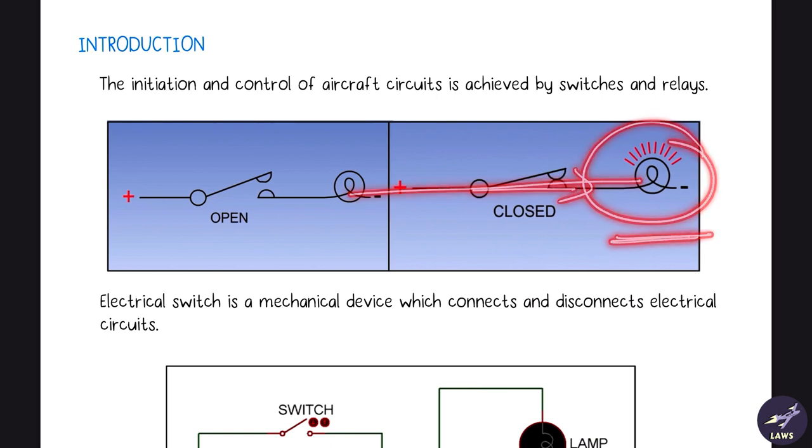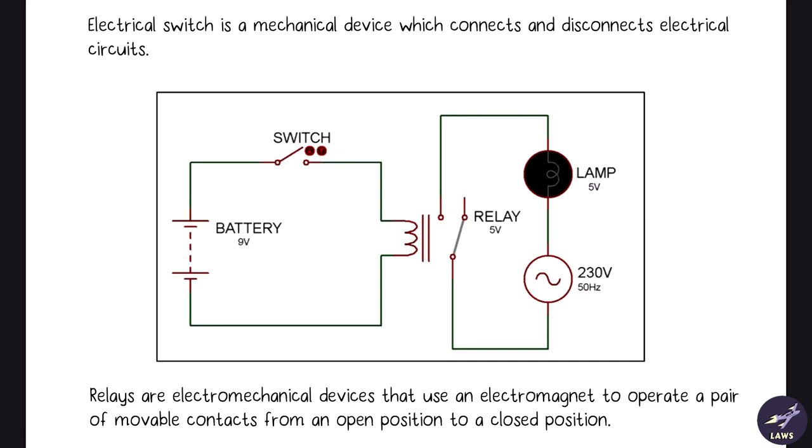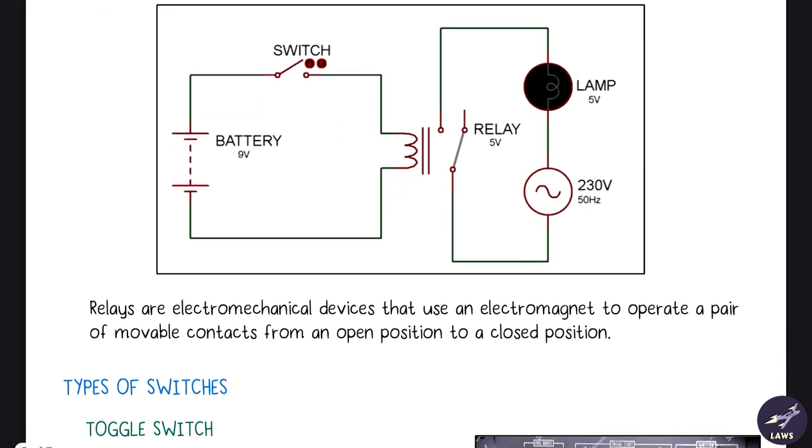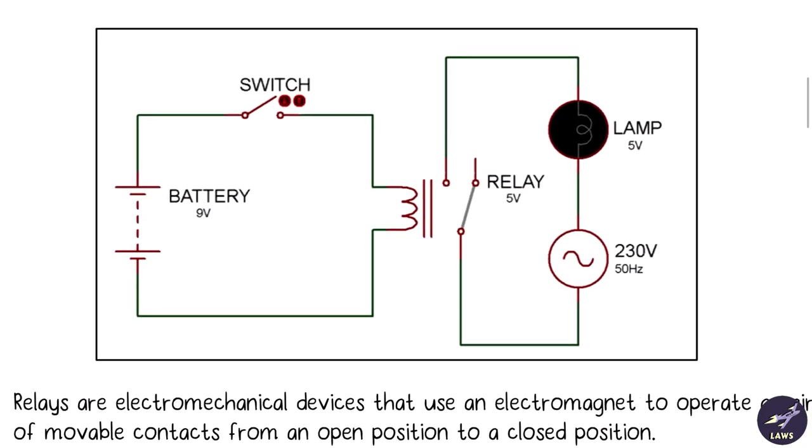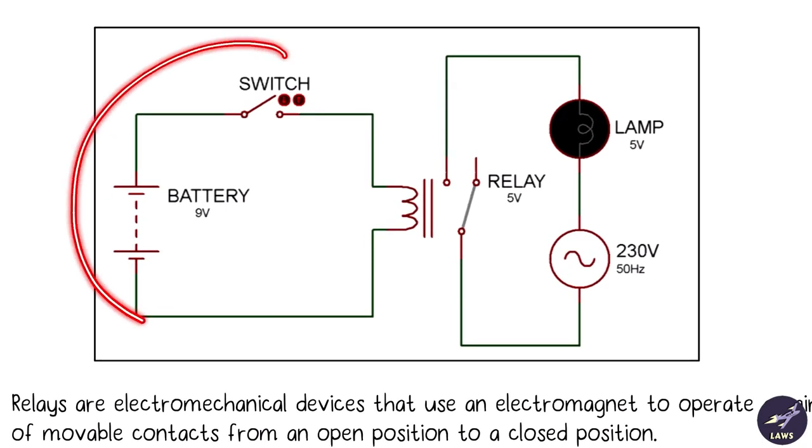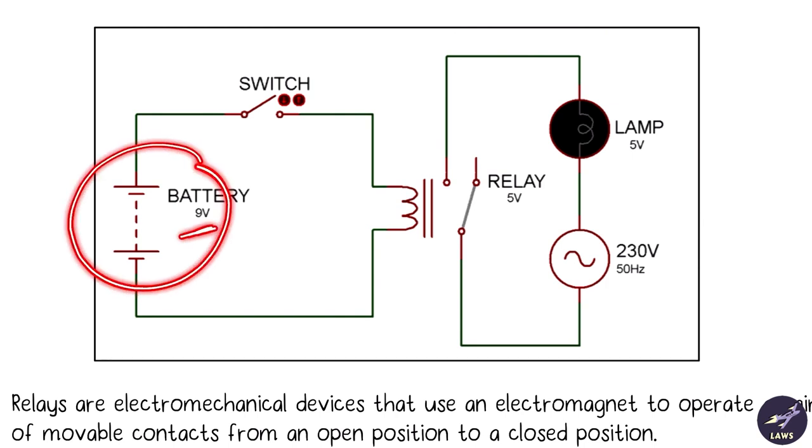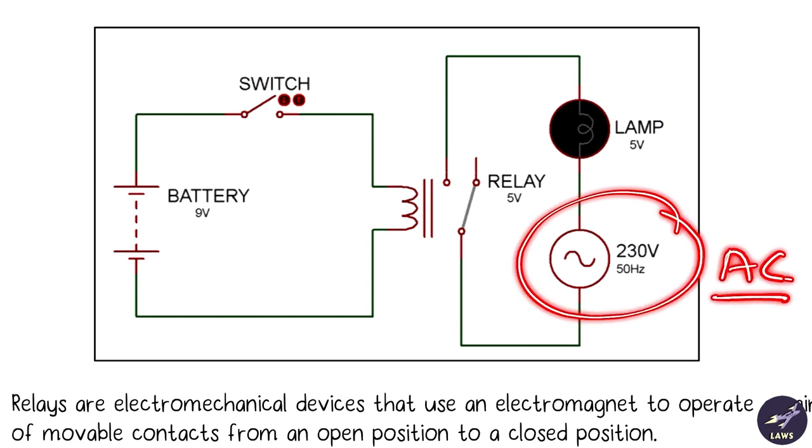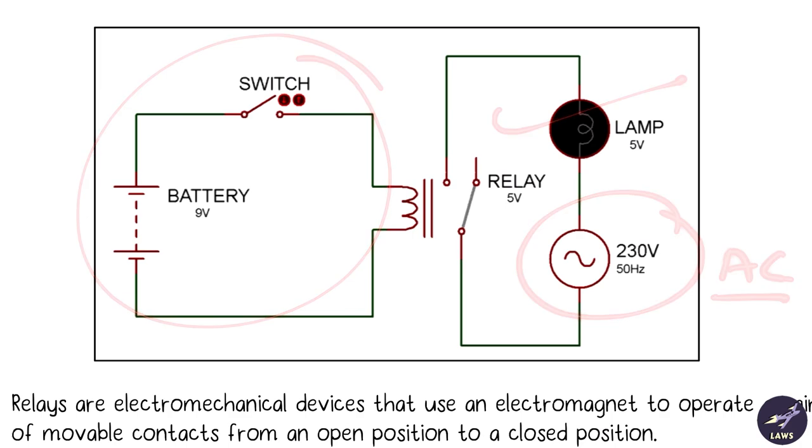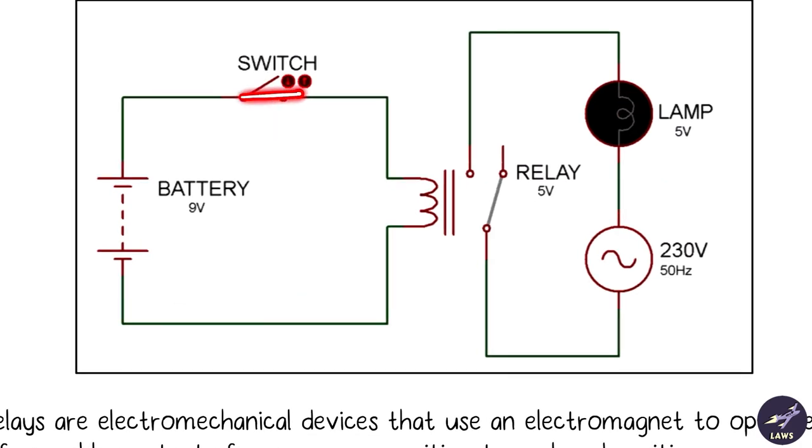Next we'll look at a relay. A relay is basically an electromagnet - a low powered circuit used to operate a high powered circuit. As you can see, the power supply here is just 9 volts DC, and here it is 230 volts AC. If we close this switch, current will flow through the circuit, and whenever electric current flows, a magnetic field is generated.